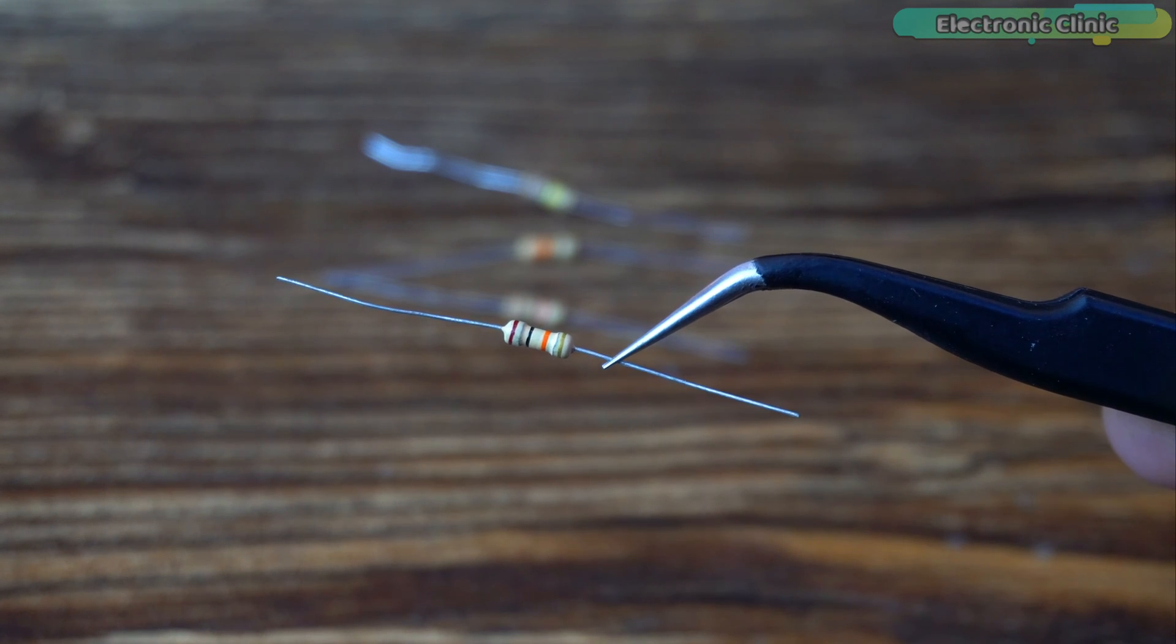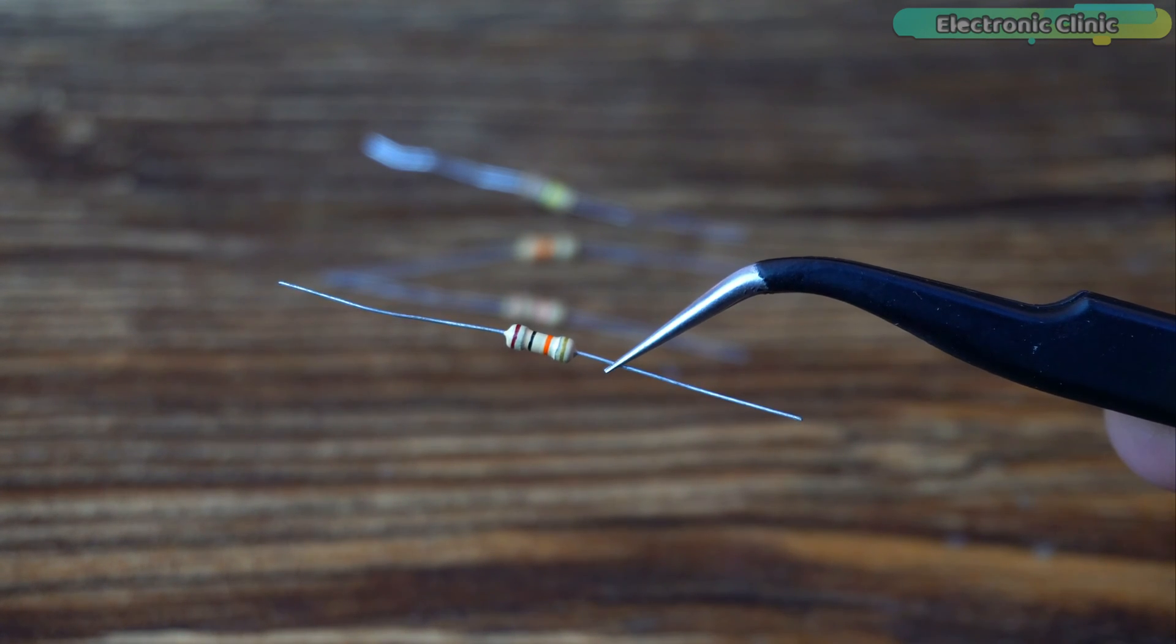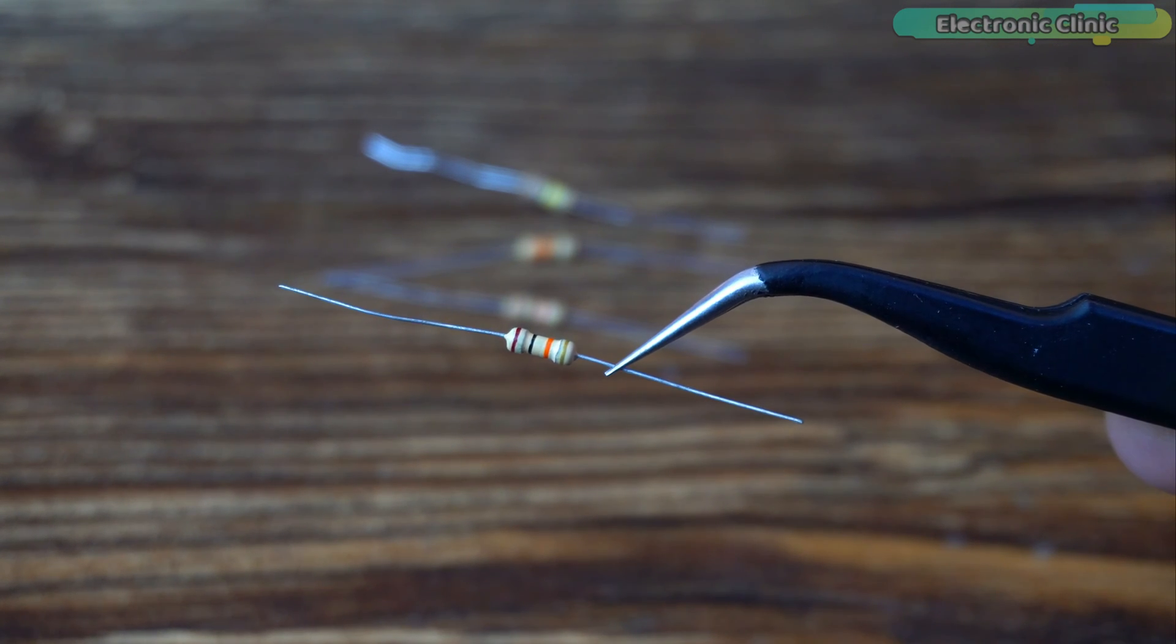So while the tolerance band is on the right side start reading the resistor from the left side. The first two bands represent the two digits and the third band is the multiplier, the number of zeros.